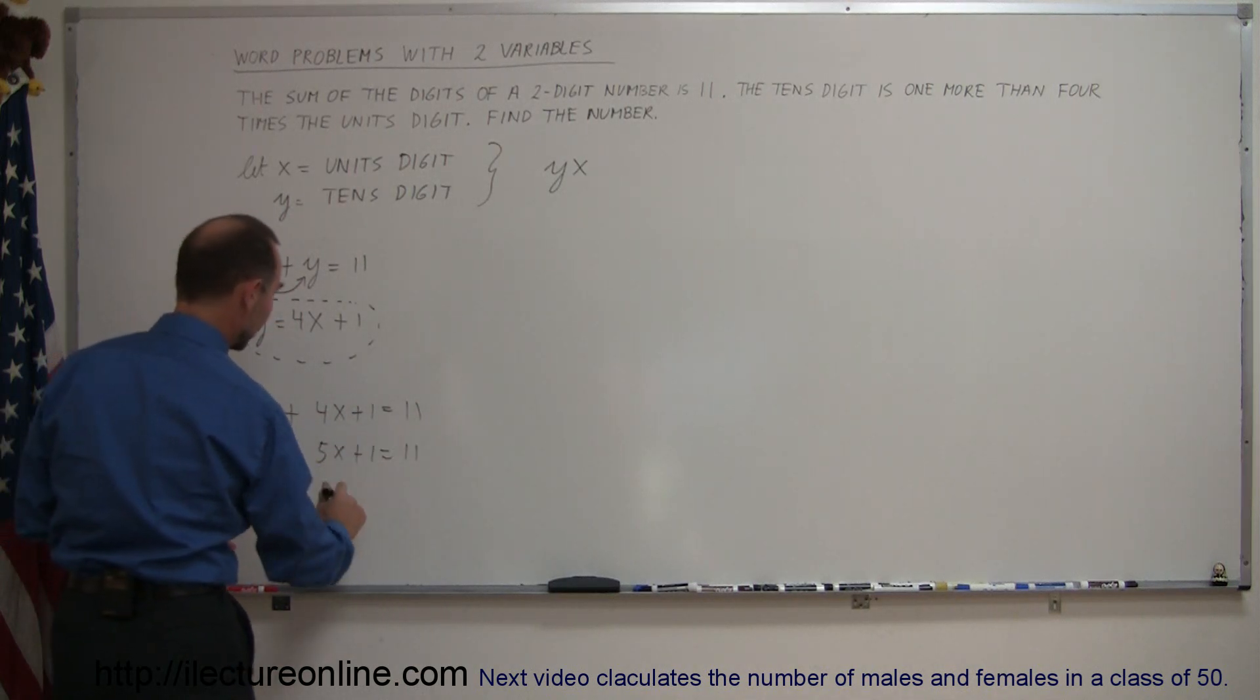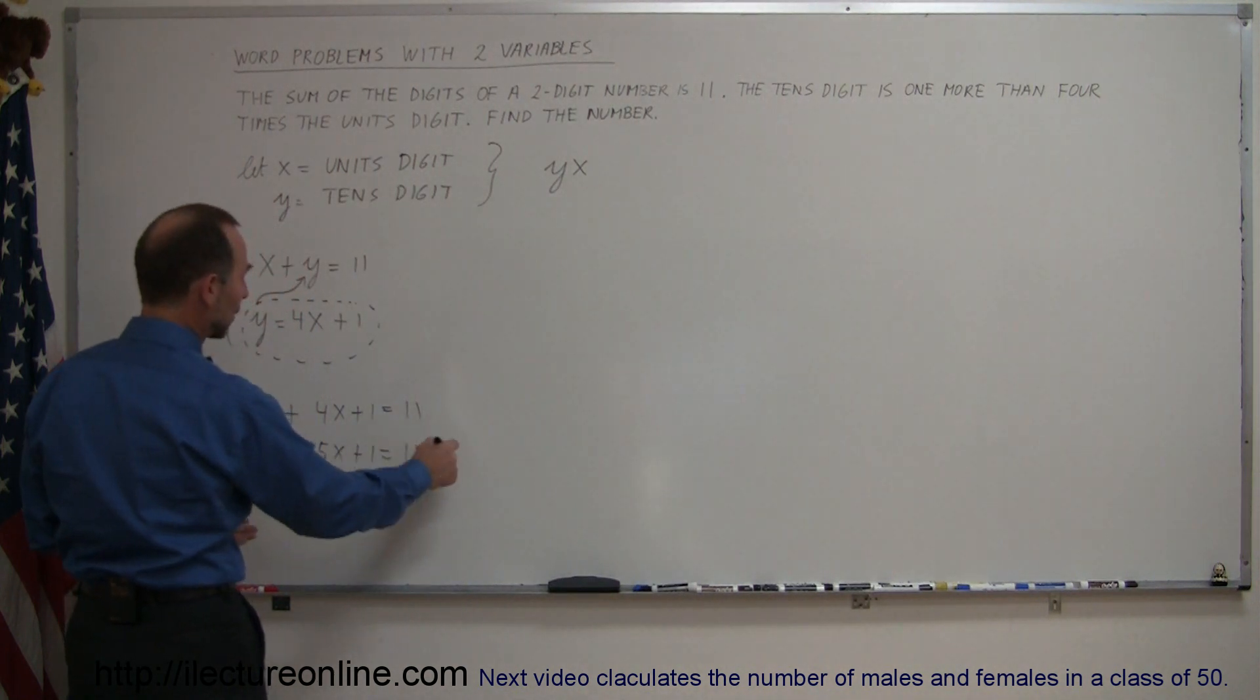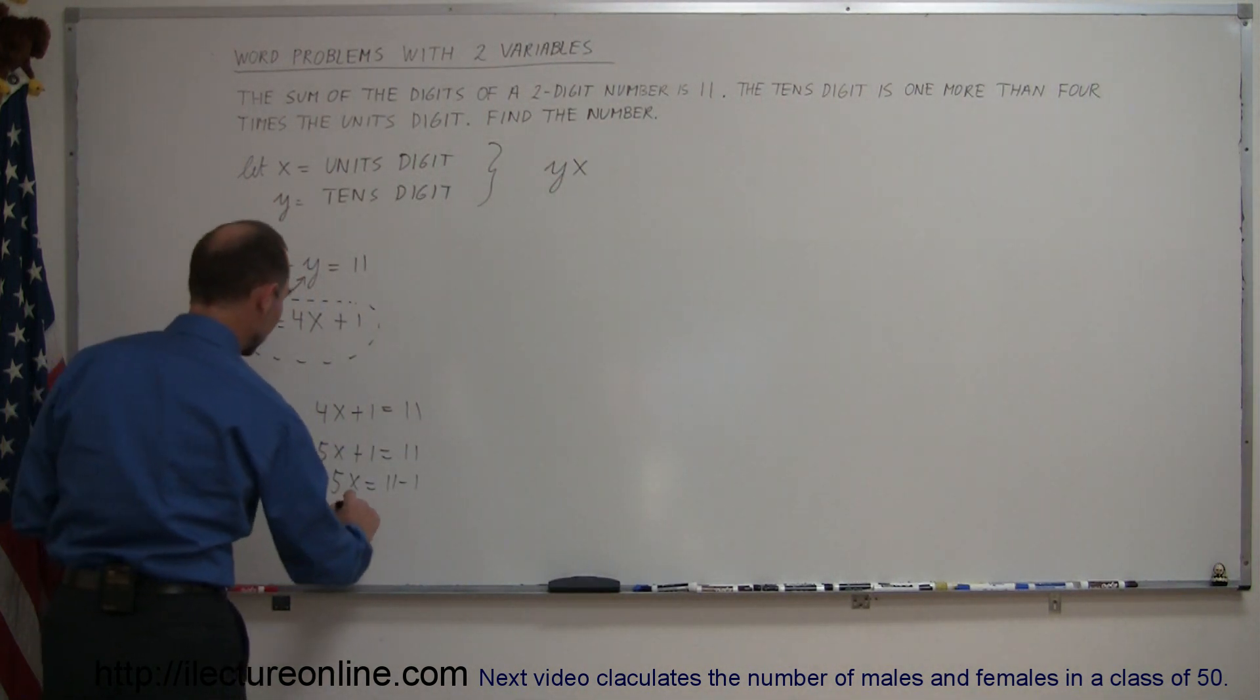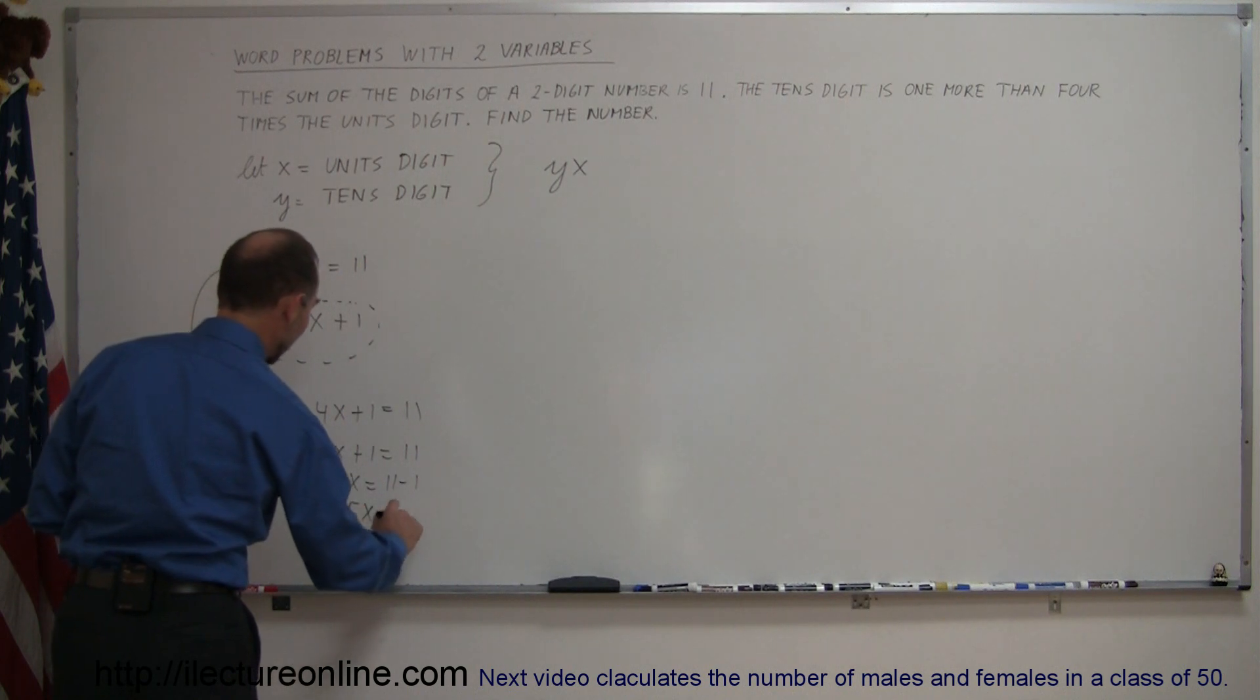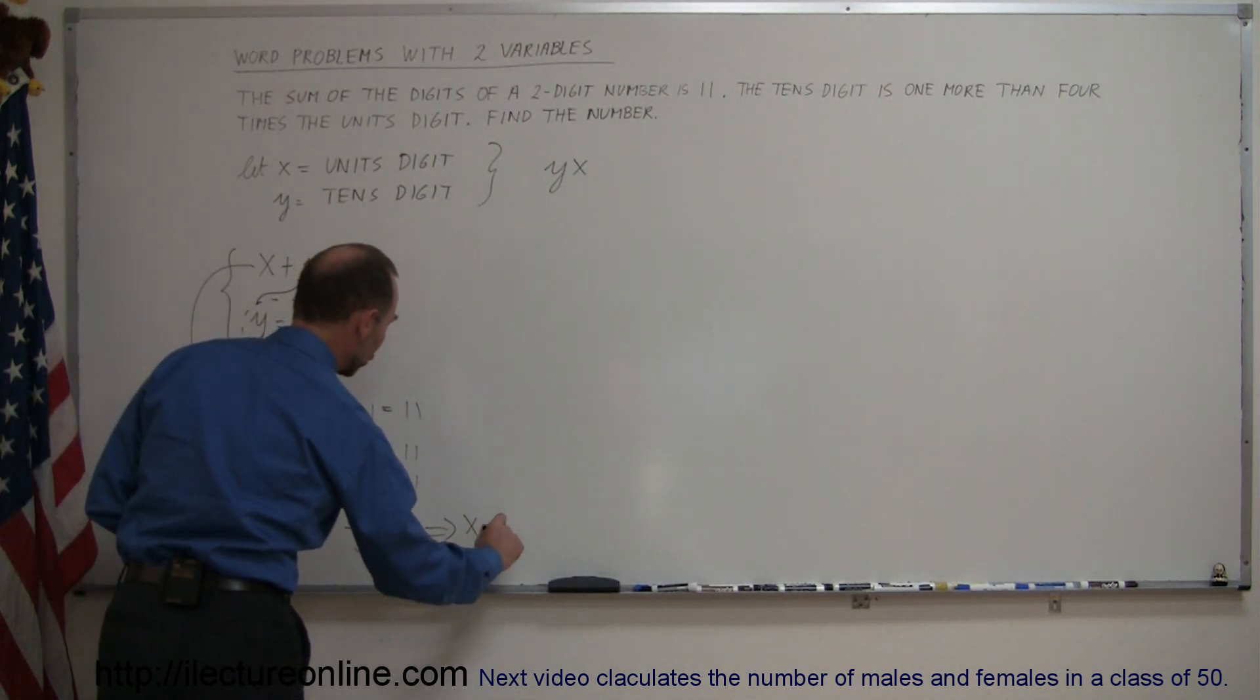Combining the x's, bringing the 1 across, this is 5x equals 11 minus 1. Remember when we cross equal sign, you change the sign. And so we have 5x equals 10, dividing both sides of the equation by 5, the coefficient in front of x. And that means that x equals 2.